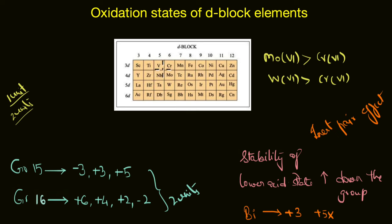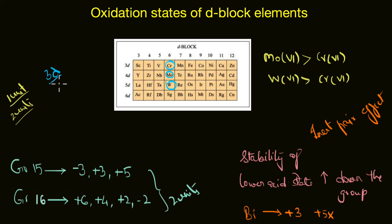A simplified explanation for this is that the 3d orbitals — as in chromium, a 3d series element — are smaller, more compact, and closer to the nucleus than 4d and 5d orbitals. This means 3d electrons experience greater nuclear attraction, so they are held closer to the nucleus and become less participative in chemical reactions. In contrast, the 4d and 5d electrons are more free to participate in chemical bonding, which makes higher oxidation states more stable in the heavier elements.